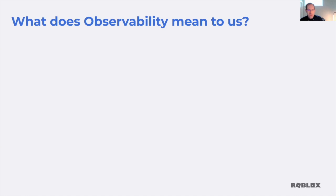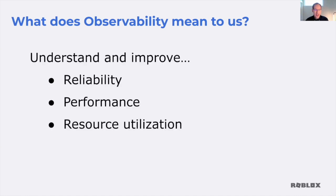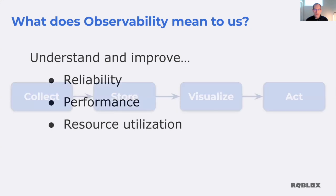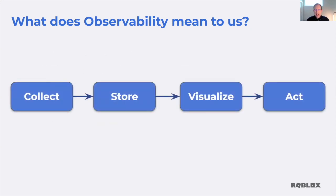So what role does observability play here? For us, the job of the observability toolset is to help engineers understand and improve the reliability of our systems, the performance, and also understand resource utilization — are we getting the best out of the data center resources we have? We break it down into four steps: collect this information from the sources that generate it, store it, visualize it, and then act on it — which could be anything from reacting to a PagerDuty alert to doing detailed tuning using a dashboard.